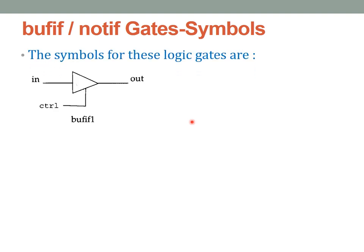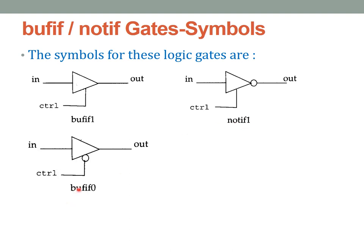Let us look into the symbols of the buff-if and not-if gates. buff-if1 works like a buffer if the control signal is 1 — it is an active high control signal. not-if1 is a normal not gate with a control signal, functioning like a not gate if the control signal is 1. buff-if0 is a buffer with an active low control signal — it functions only if the control signal is 0, highlighted by a bubble. not-if0 functions like a not gate if the control line is 0.